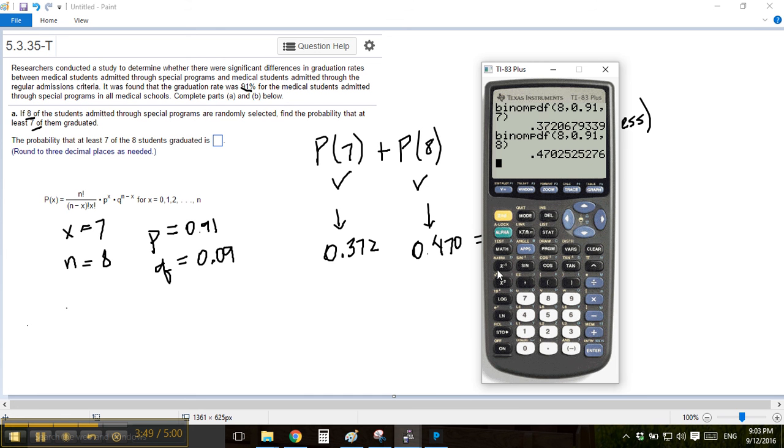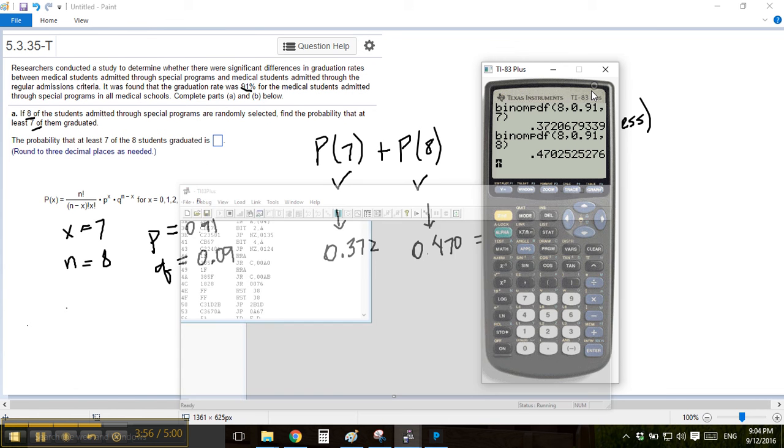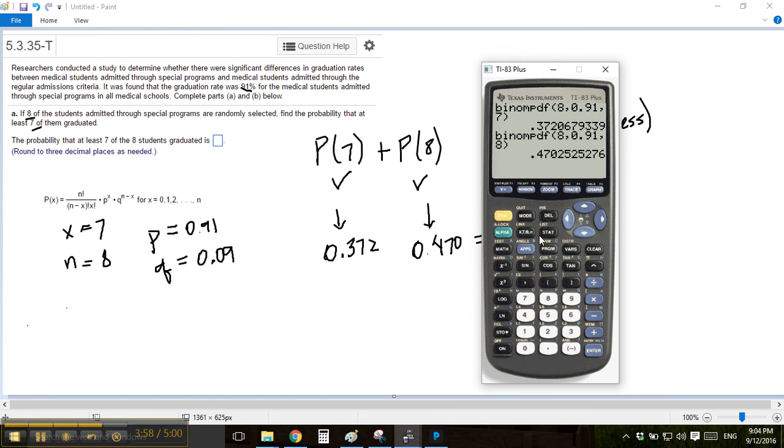You'll come over here, and this time you're going to do second distribution, and now we're going to do binomial, and it's CDF. Alright, this is, the C represents cumulative. So the P is kind of like a point, the probability of 7 exactly, the probability of 8 exactly. Cumulative says all those.